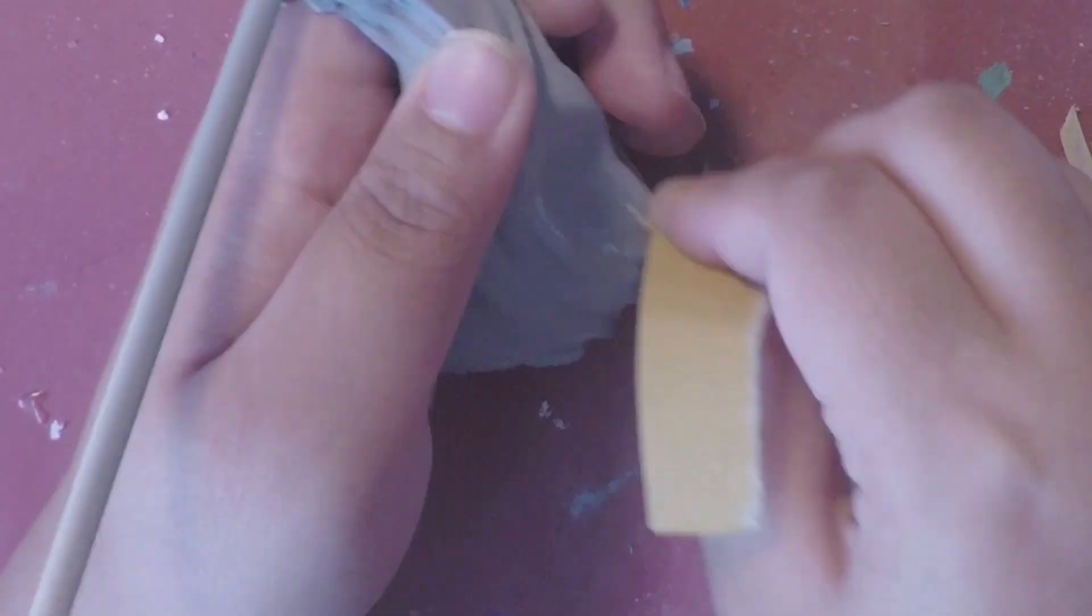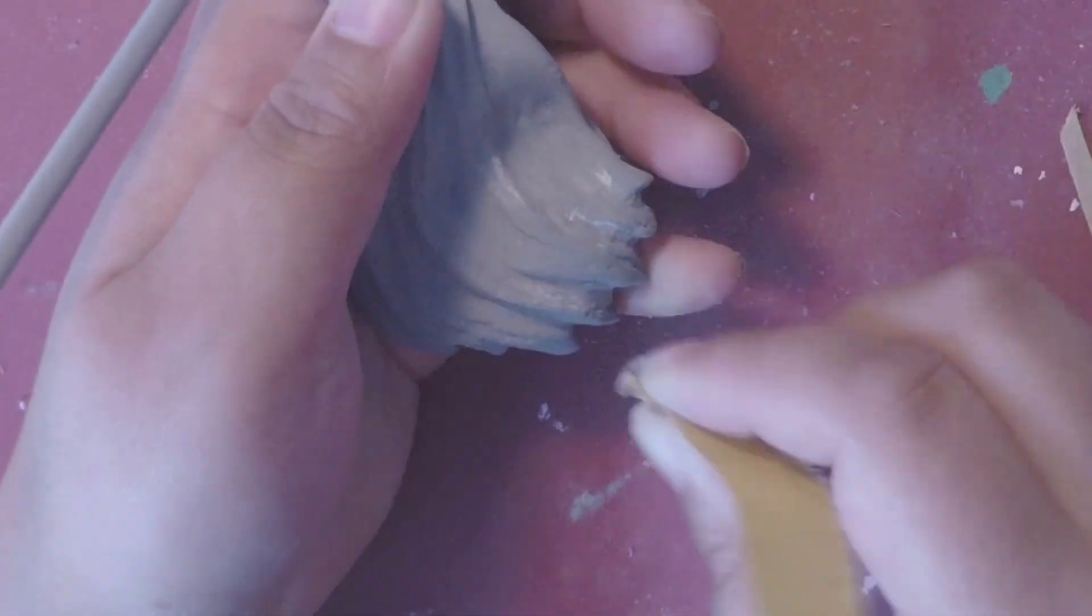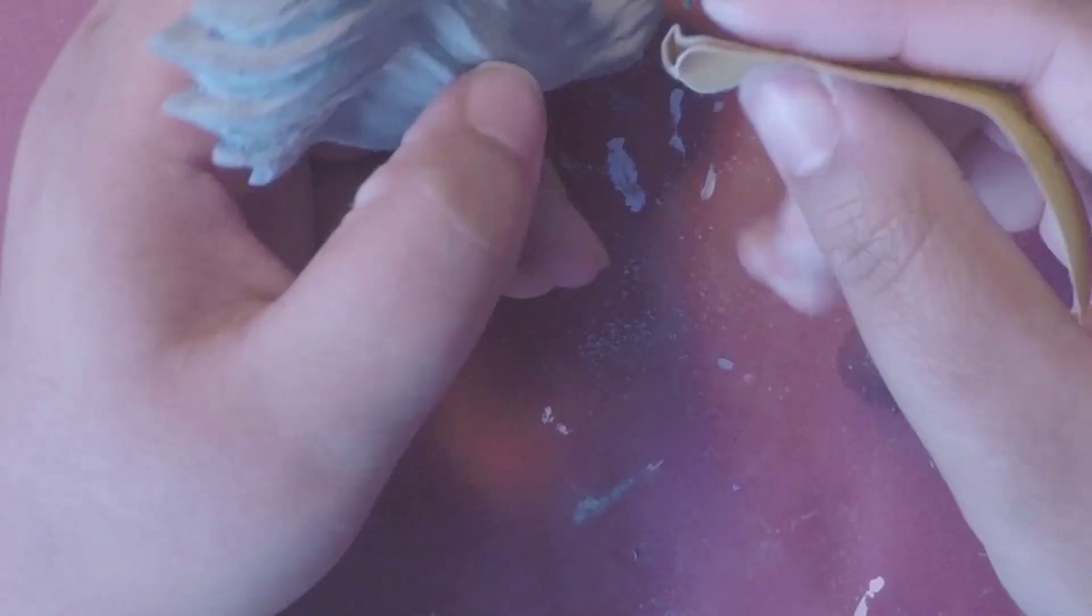So off camera, after everything was sanded, I gave it a coat of Rust-Oleum's 2-in-1 filler primer and sanded that almost entirely off. This is to ensure everything was as smooth as possible.